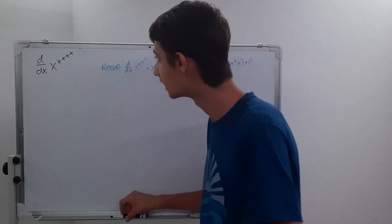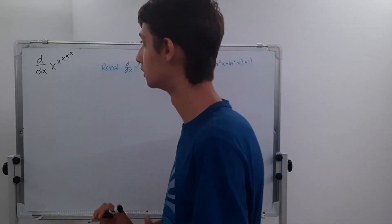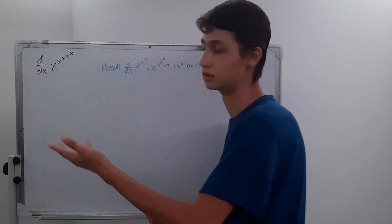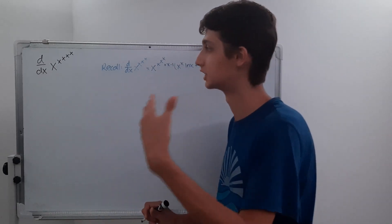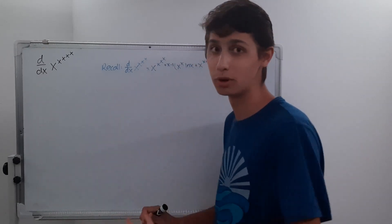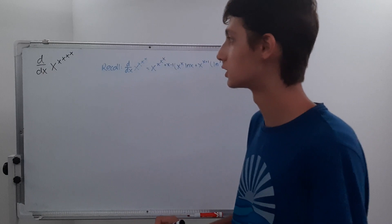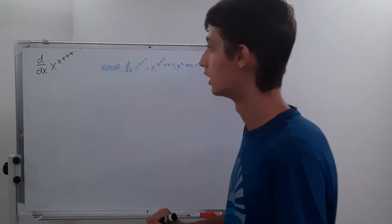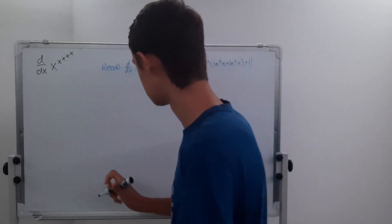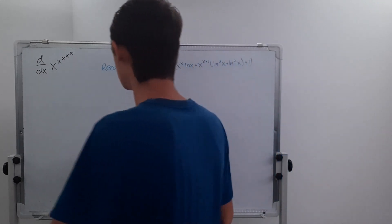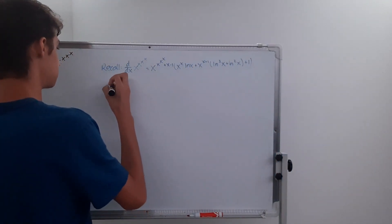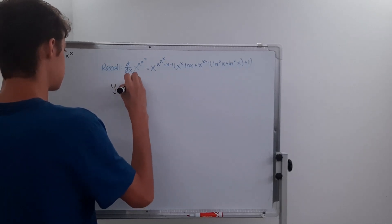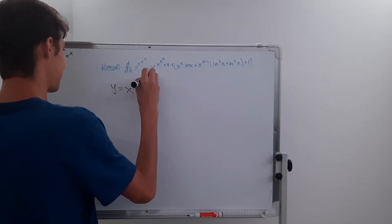The first thing we'll do is use logarithmic differentiation — that's kind of the whole point of this series. I'm going to do what I did for the first part of the last episode and start by setting y equal to x to the x to the x to the x to the x.